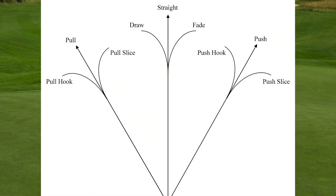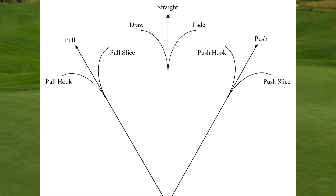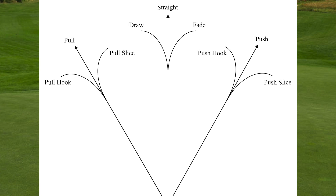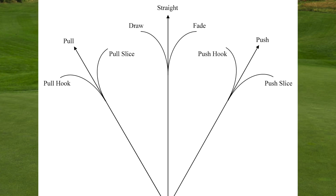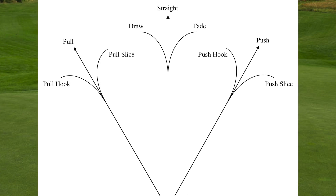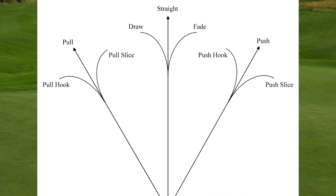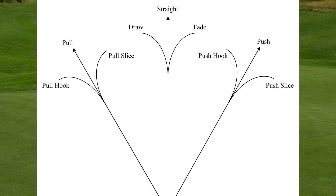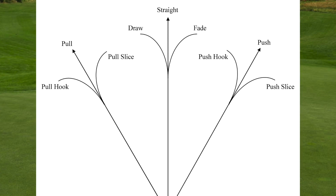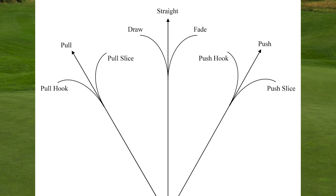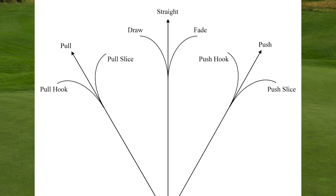We have nine ball flight laws — left, center, and right. On the left side, if we come over the top and across the line to the inside, and the clubface is square to the direction of that swing, it's going to be a pull left. If the clubface is open to that line, you're going to get a pull-slice, and if it's closed to that direction, you're going to get a pull-hook.